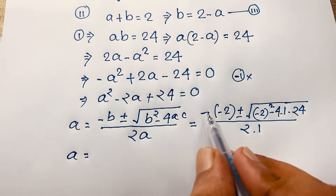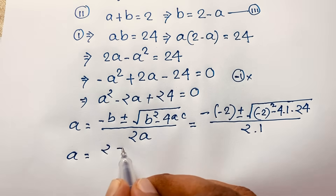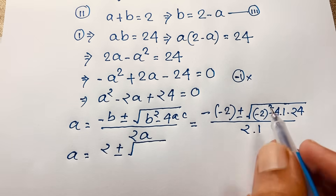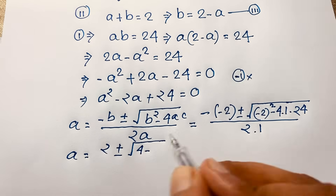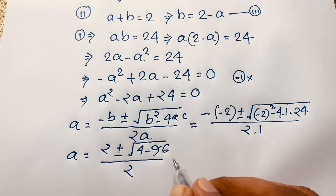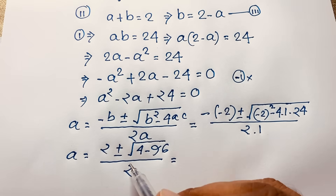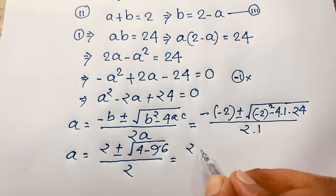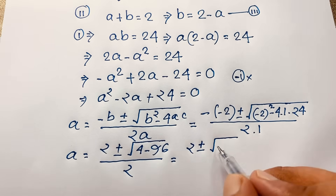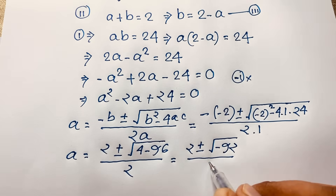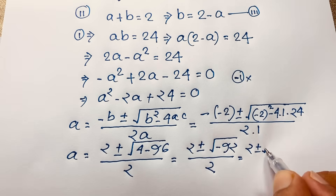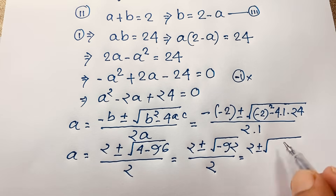So it will be 2 plus or minus square root of: negative 2 to an even power is always positive, so it is 4, minus 4 times 24 which is 96, over 2 times 1 which is 2. Now evaluating this math expression: it will be 2 plus or minus square root of (96 minus 4) — wait, that is 4 minus 96, which gives negative 92, over 2.